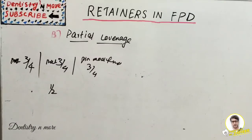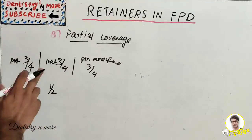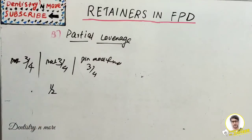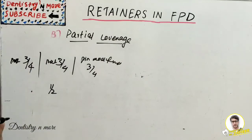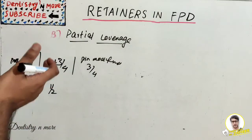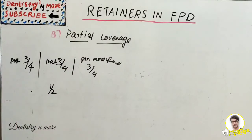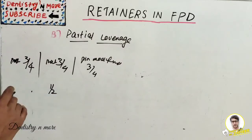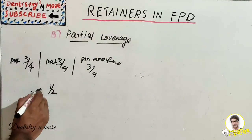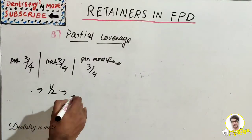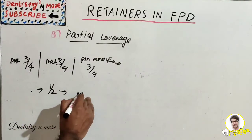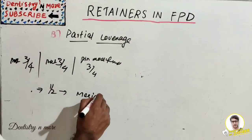The half crown is a partial coverage restoration that restores the occlusal surface or incisal edge, the mesial surface, and a portion of the facial or lingual surface. It is basically used for mesially tilted teeth.